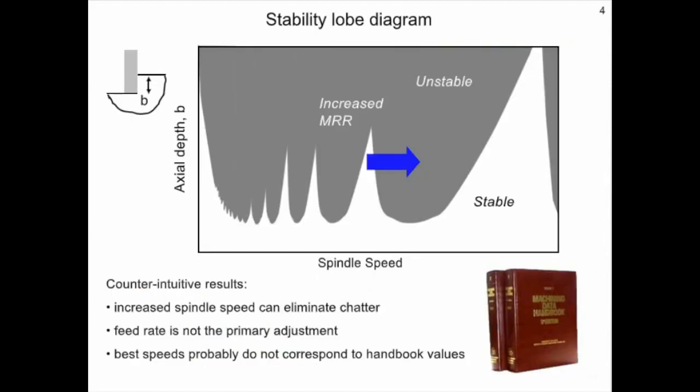This graph shows a stability lobe diagram. On the vertical axis we have the axial depth of cut and milling. On the horizontal axis we have the commanded spindle speed. We see that the plot is divided into two regions, a gray region, which indicates axial depth-spindle speed combinations that will give chatter, and a white region, which identifies axial depth-spindle speed combinations that will lead to stable operation.